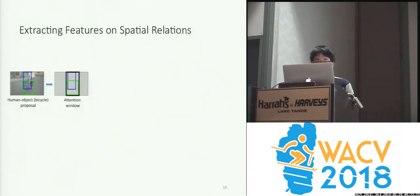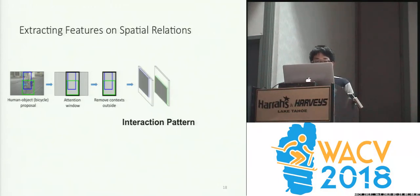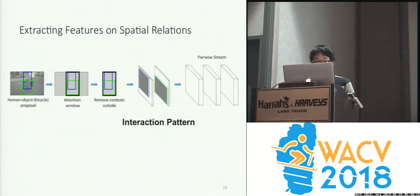So how do we extract features on the spatial relations between a human and an object? First, we compute the tightest window that encloses the two bounding boxes. We remove the content outside the window. And we construct a two-channel binary mask, where the first channel is a mask for the human bounding box and the second channel is the mask for the object bounding box. We call this the interaction pattern, and use it as input to a convolutional network to extract features on the spatial relation.